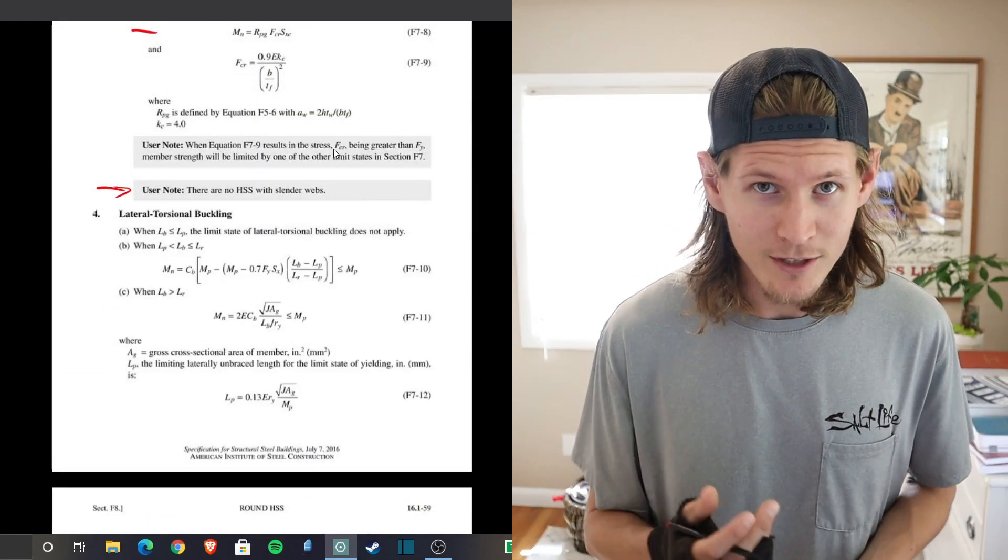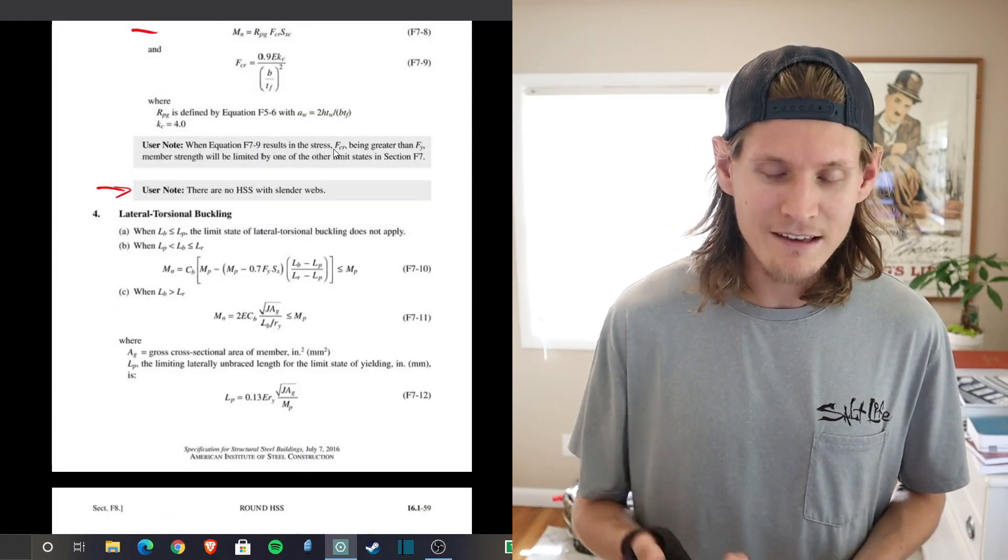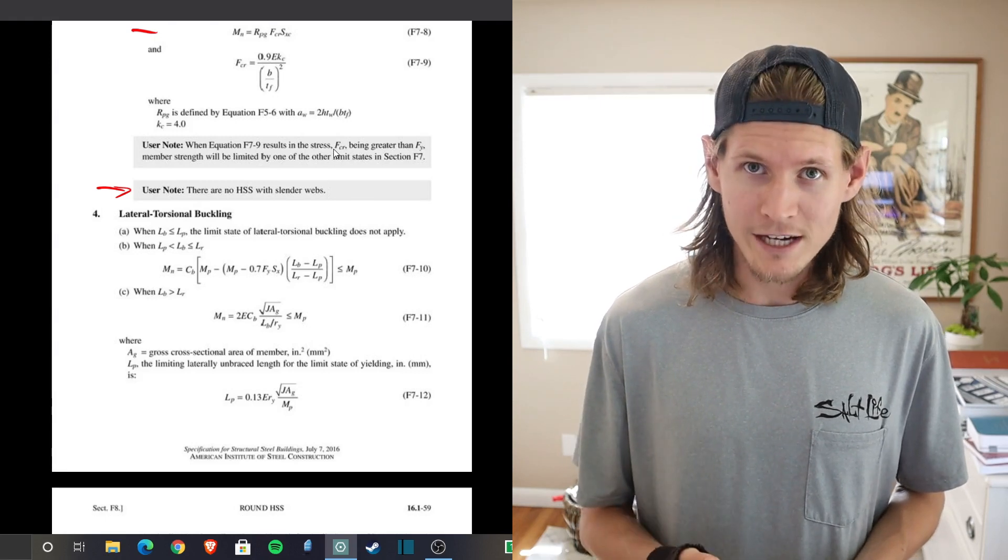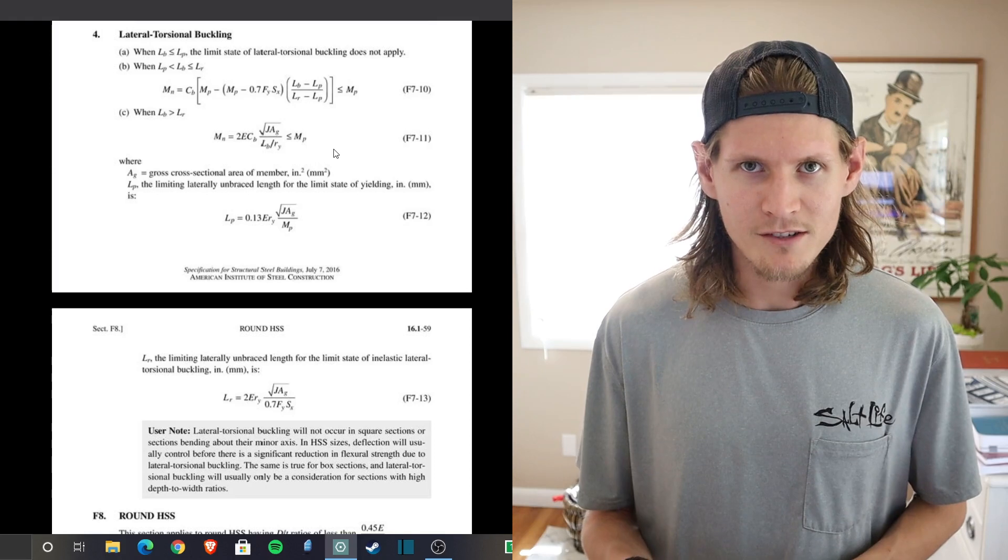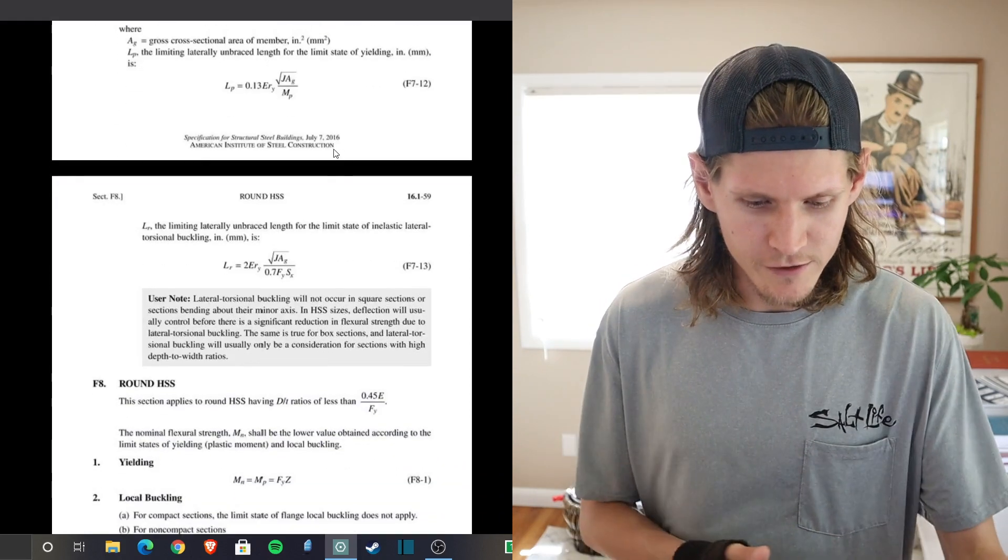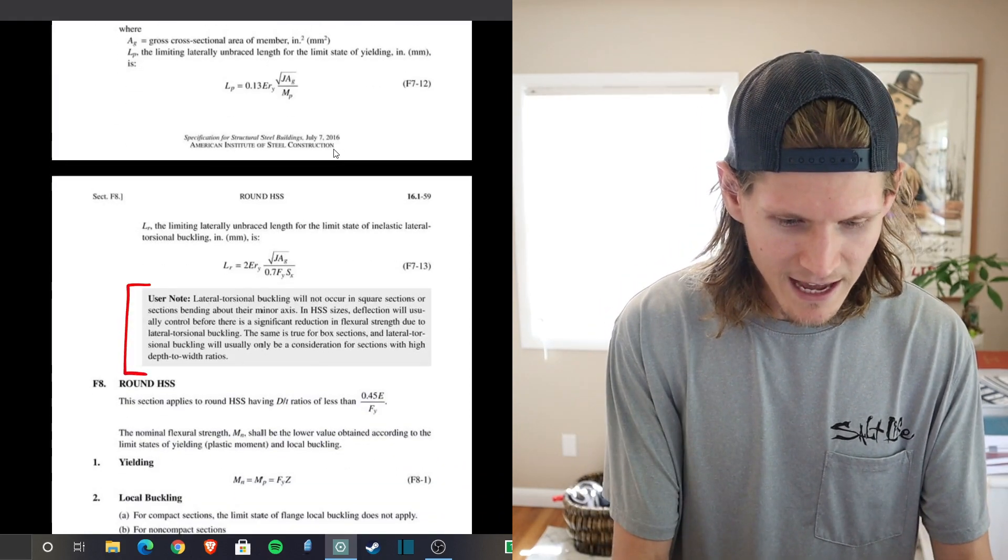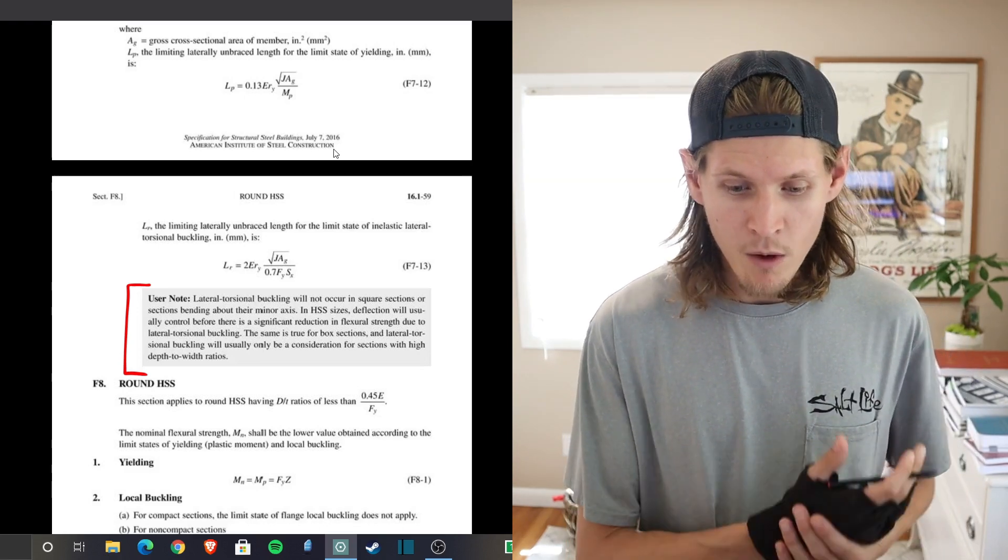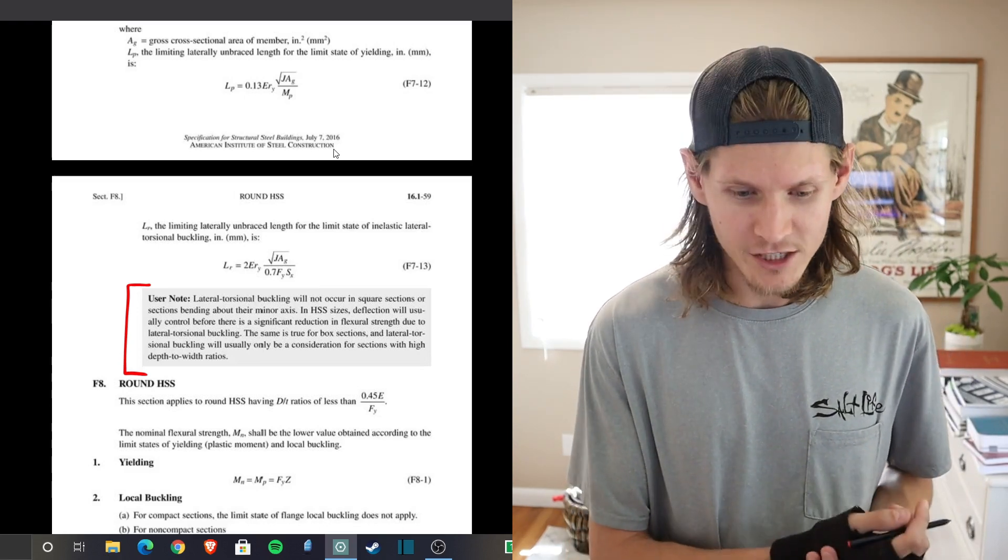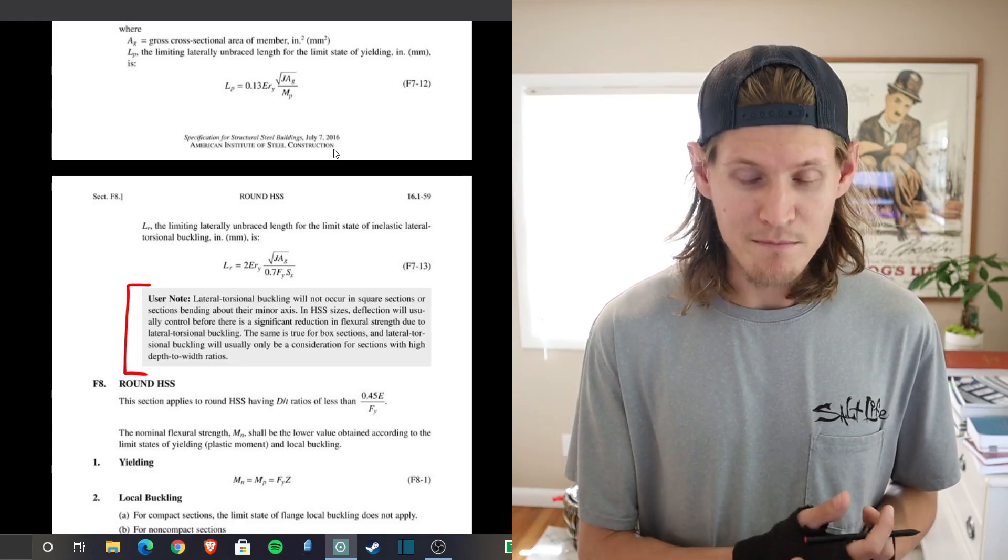And lastly our new limit state lateral torsional buckling has been included and they give you the criteria and equations in order to solve for this limit state. Very similar to other beam geometries for steel but you will notice at the end here they give you a user note that says lateral torsional buckling will not occur in square sections or sections bending about their minor axis.